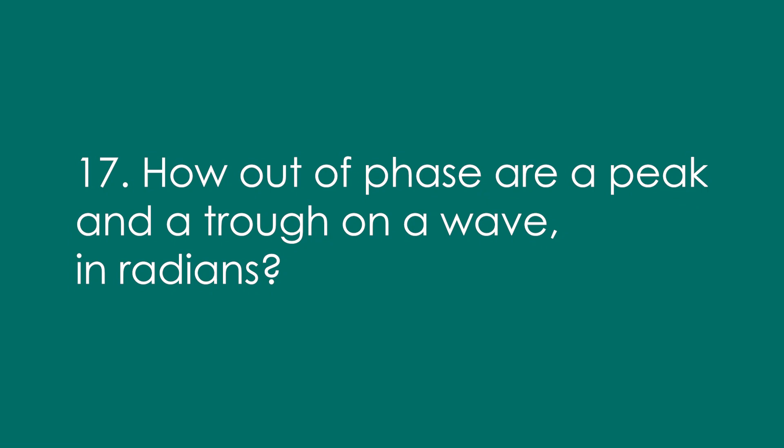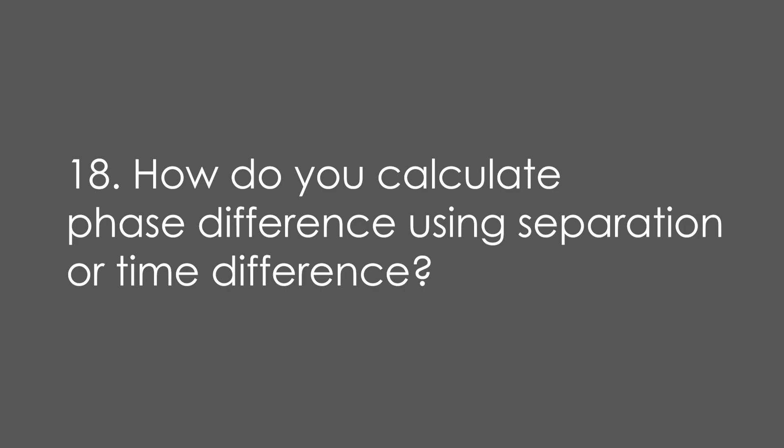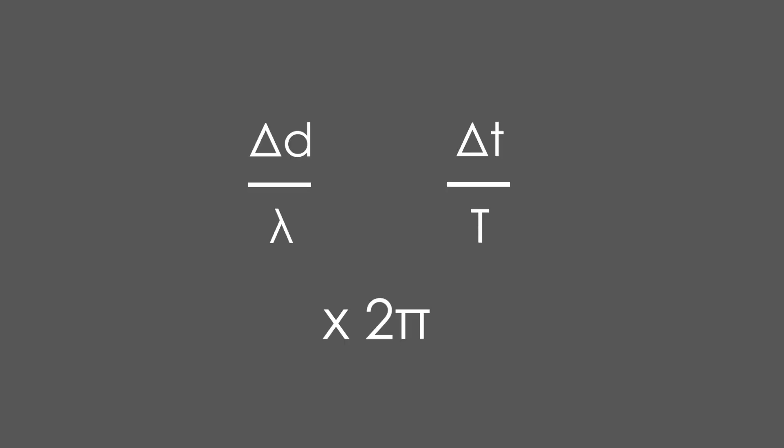17. How out of phase are a peak and a trough on a wave in radians? Pi radians — it's half a complete wave. 18. How do you calculate phase difference using separation or time difference? It's the separation delta d divided by the whole wavelength, or difference in time divided by the time period — in other words, the bit divided by the whole lot. Then you can multiply by 2 pi to turn it into radians.